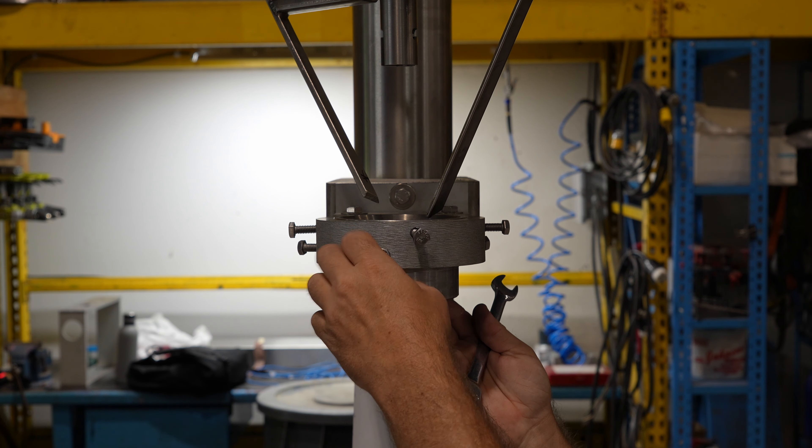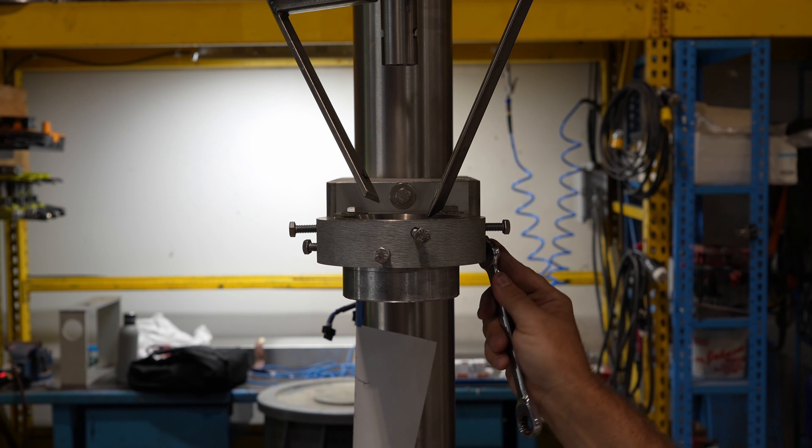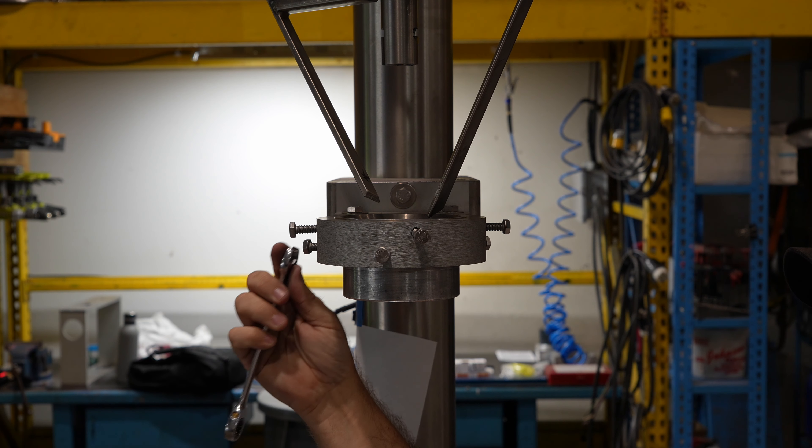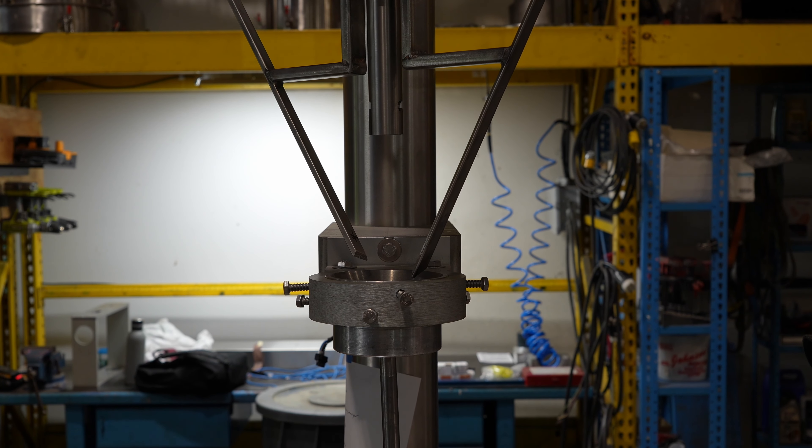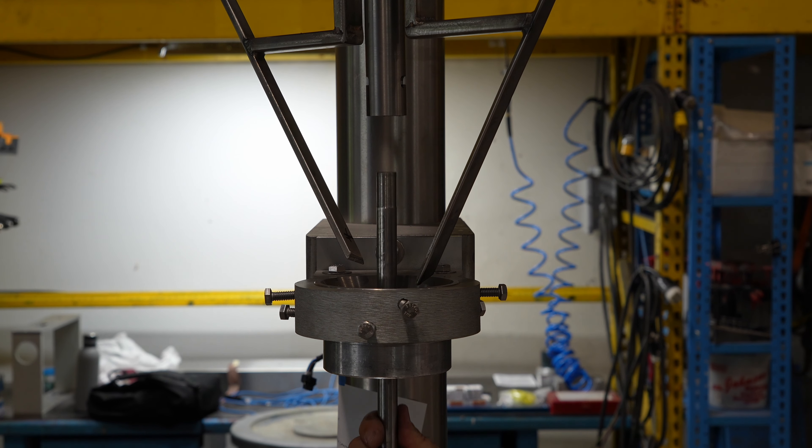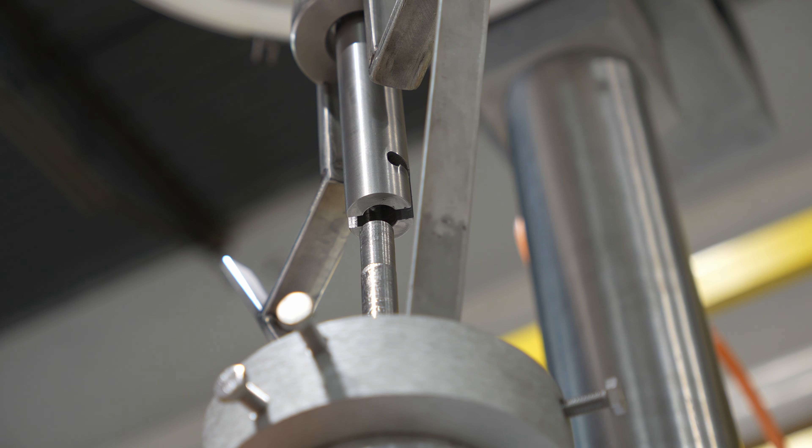After we do that, we're going to tighten the bottom three thumb bolts to keep the hub secure. After the hub is secure, we're going to insert the alignment rod through the hub and into the auger shaft. Right now the rod does not fit properly into the auger shaft. The auger would not properly be aligned and would cause wear and tear to the auger and funnel.